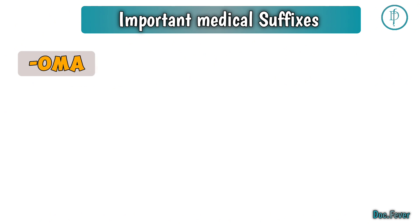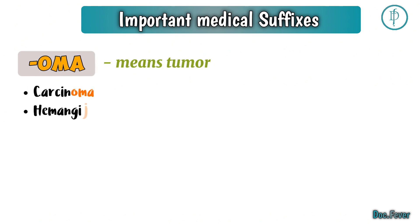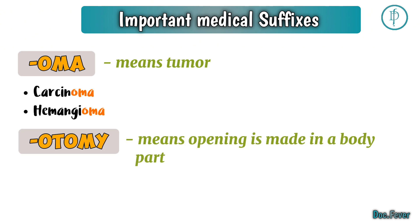Oma is a suffix which means tumor, like carcinoma and hemangioma. Otomy is a suffix which means an opening is made in a body part. For example, laparotomy and cystotomy.